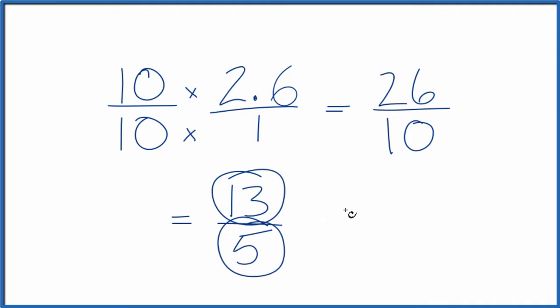We could change it to a mixed number as well. Let's see. 5 goes into 13. 2 times 5 is 10 with 3 left over. Bring the 5 across. And we could also write the decimal 2.6 as a mixed number, 2 and 3 fifths.